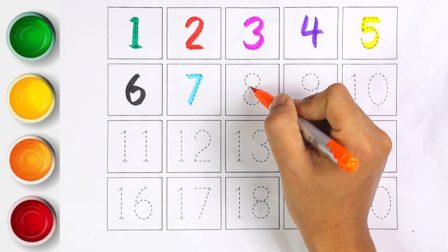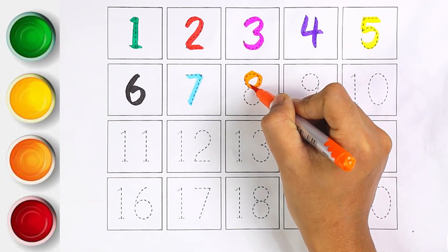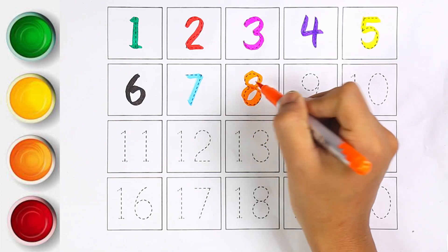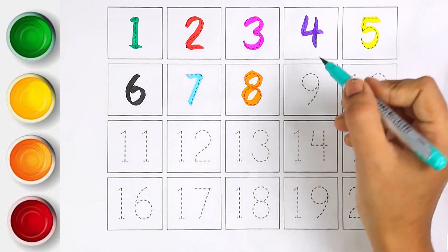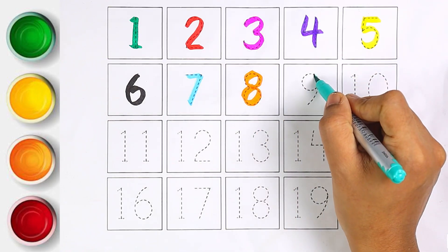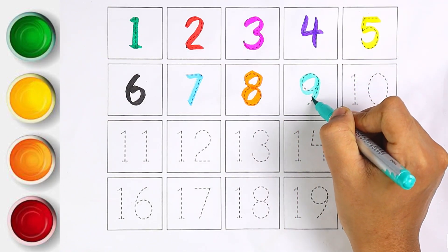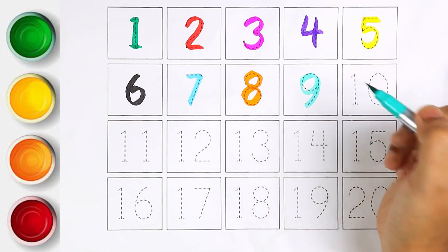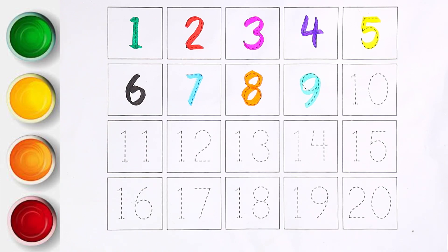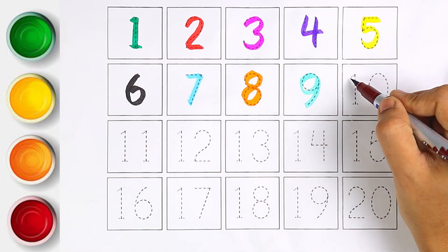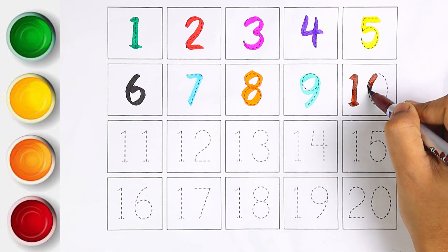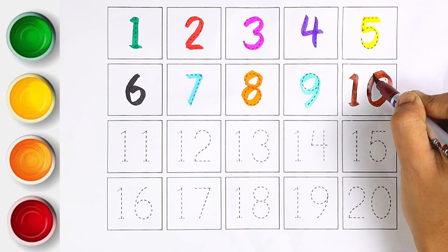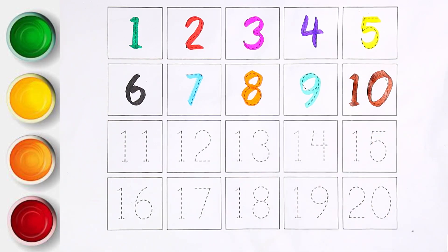Orange color — number eight. Light green color — number nine. Brown color — number ten. One and zero makes the number ten.